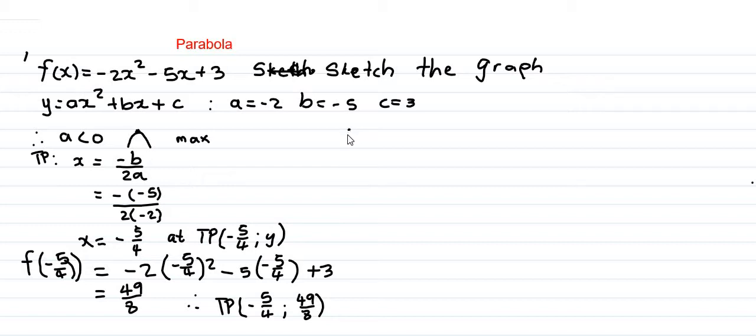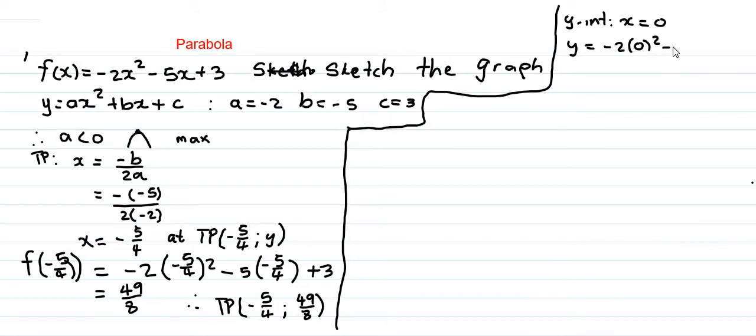Now we find the y-intercept. For the y-intercept, we make x equal to 0. So y equals minus 2 times 0 squared minus 5 times 0 plus 3, which gives us y equals positive 3. So when x is 0, y is 3. This point (0, 3) is the coordinate of the y-intercept.